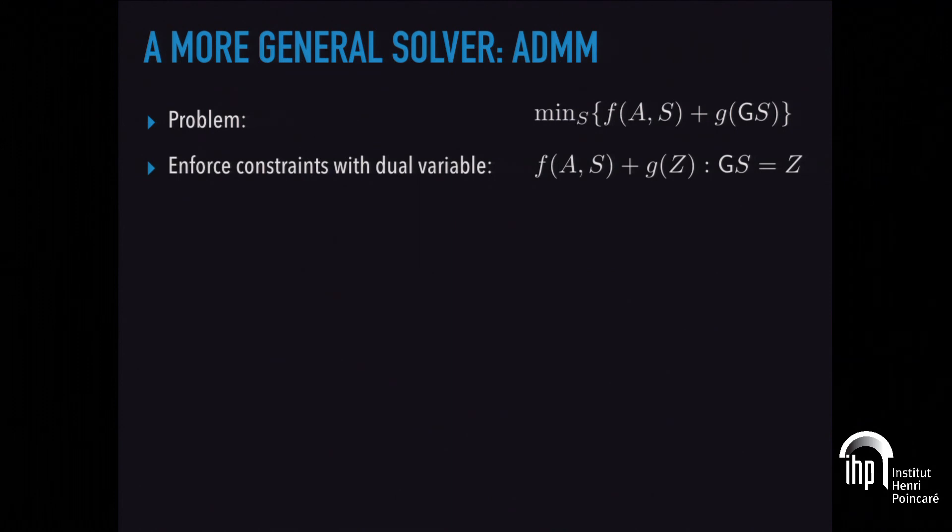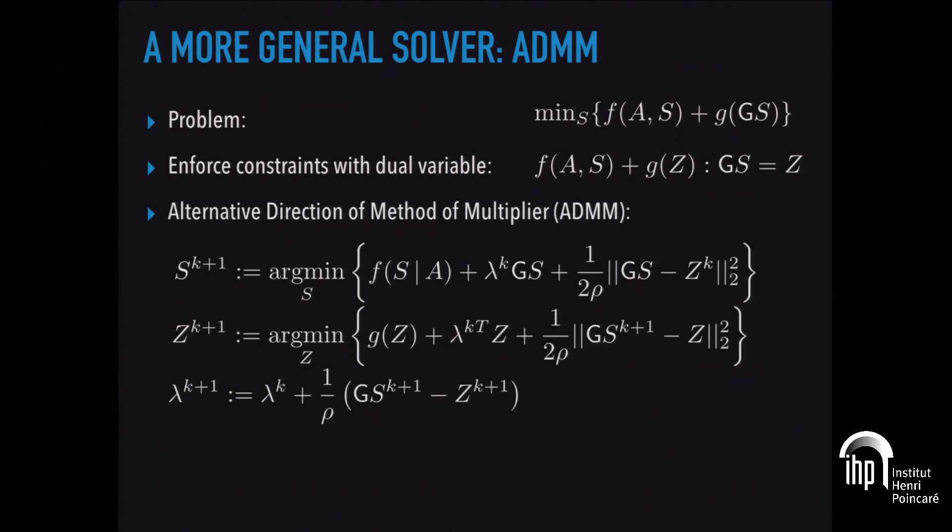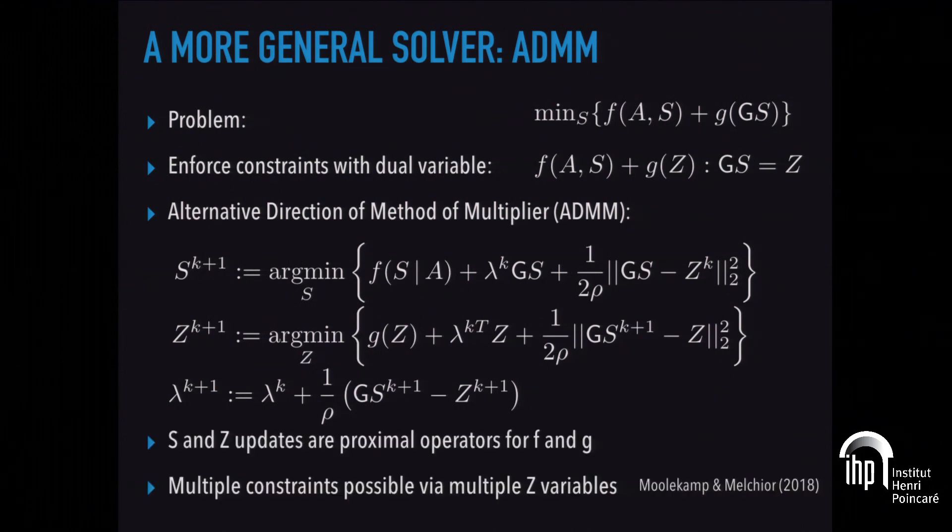The algorithm for doing that is based on a Lagrangian multiplier idea. These two functions are expressed in what's called the consensus form. You now have three variables. But you require consensus that the Z variable is equal to G times S. Then what happens is that's called the alternating direction method of multipliers. It's based on a Lagrangian multiplier. This lambda term is this multiplier. It comes with three equations. There's an S update that minimizes F. There's a second equation that minimizes G. So you minimize F and G. There is one equation that ties them all together, so that both of those optimize the same thing eventually.